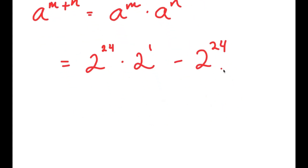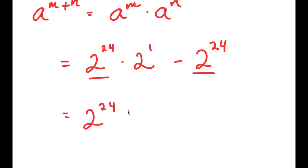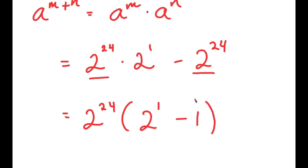From here, what I'm going to do is factor out 2 to the power of 24, because notice how both of these terms have 2 to the power of 24 in them. So I get 2 to the power of 24 times — 2 to the power of 1 divided by 2 to the power of 24 is just 2 to the power of 1, and negative 2 to the power of 24 divided by 2 to the power of 24 is just negative 1.